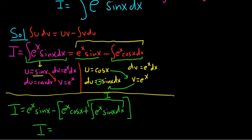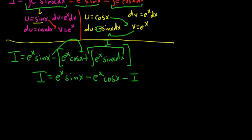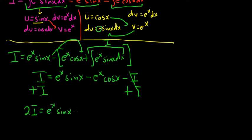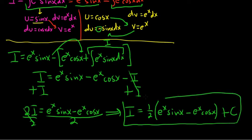So we have i equals e to the x sine x minus e to the x cosine x, and then distributing the negative gives minus i. Adding i to both sides: 2i equals e to the x sine x minus e to the x cosine x. Dividing by 2, i equals one half times the quantity e to the x sine x minus e to the x cosine x, plus C.